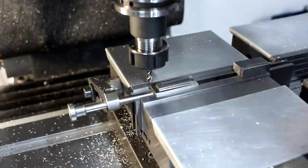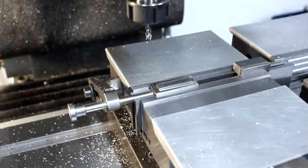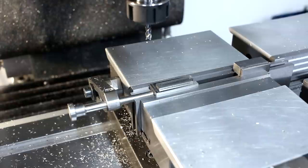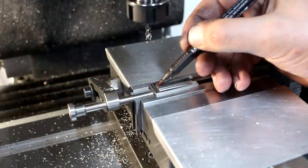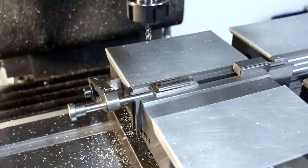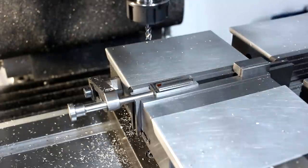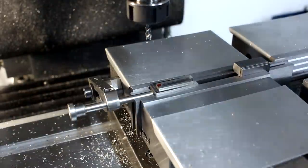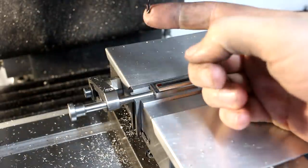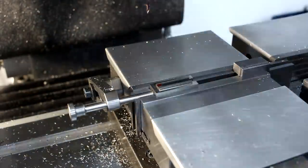Now we change tools because we need to open the slot in this position here too, to have the same height level as the step we just machined around the part. This is a 3mm 2-flute Mitsubishi carbide end mill.